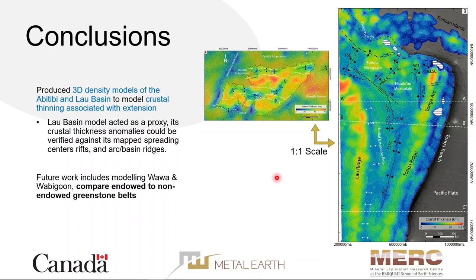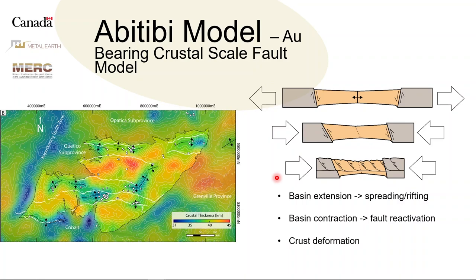Q&A: A question was asked about whether deformation since the formation of the Abitibi would have masked any of the features in crustal thickness. The speaker replied that this was one concern, and the hope is that through the preservation of the Abitibi it wouldn't have been mixed up too much. In the Kapuskasing uplift zone, that area wouldn't have been interpreted as a rift or spreading center because you would have had uplifted lower crust. But hoping that because the geometry of the Abitibi has had primarily shortening, and not as much rotation or rolling, the geometry of the MOHO would have been reasonably well preserved — comparing it to the rifted margin modeling Kim Welford had done in the past, showing that these features are generally preserved in areas of compression.